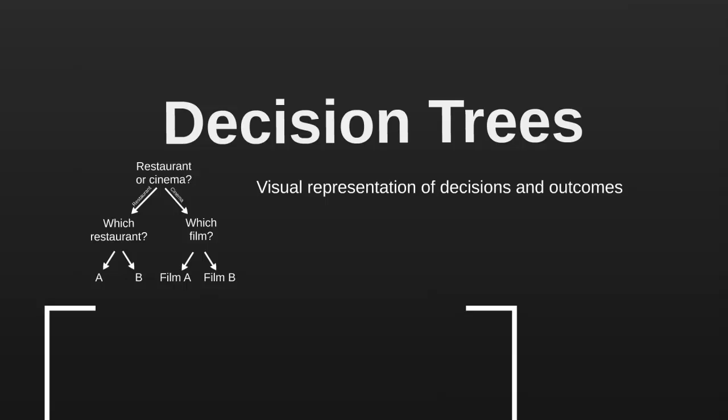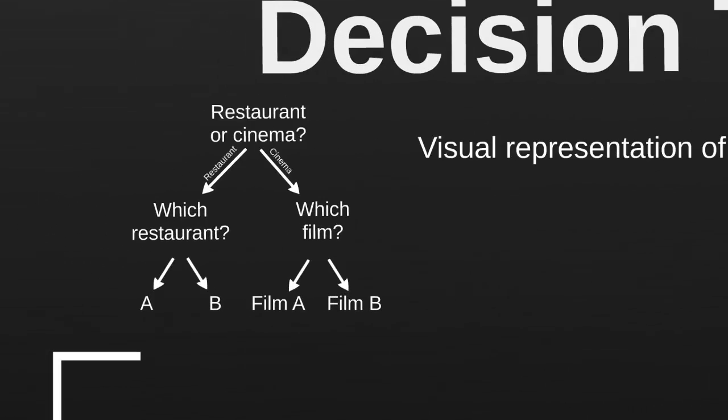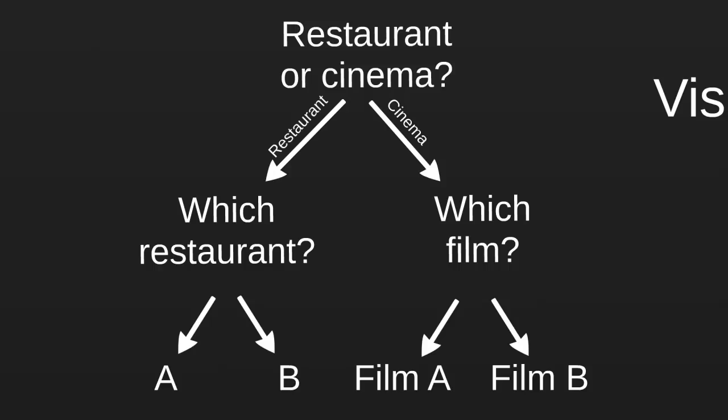To see the core idea behind decision trees, let's consider an example. Say that you're meeting your friends this evening and your friends ask you whether you'd like to go to the cinema or go to a restaurant. In the town where you live there are two restaurants, and the cinemas are currently showing two films. We can use a decision tree to visually summarize the decisions that you and your friends are facing — first, whether to go to a restaurant or go to the cinema.